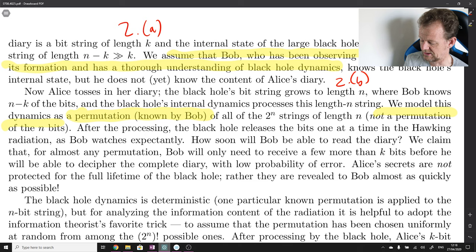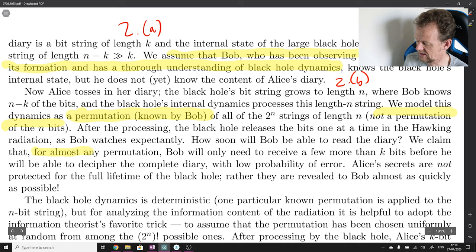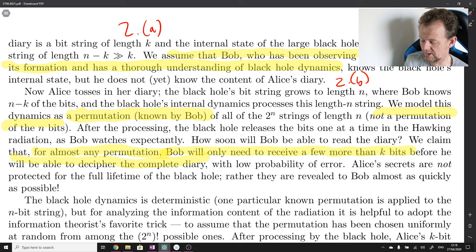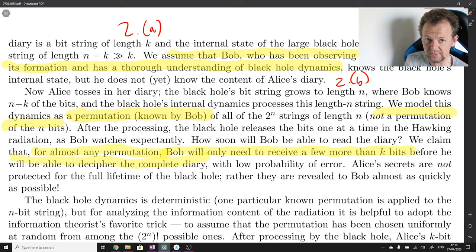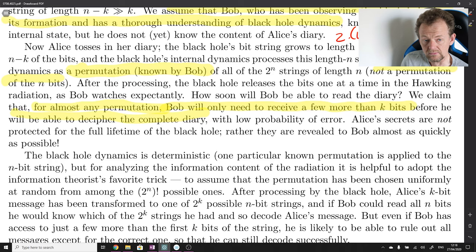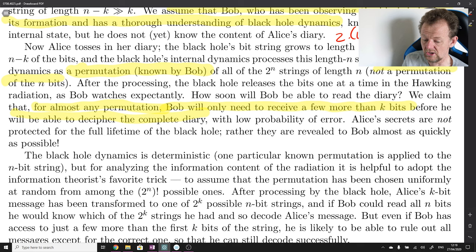After the processing, the black hole releases the bits one at a time in the Hawking radiation, as Bob watches expectantly. How soon will Bob be able to read the diary? The paper claims that for almost any permutation, Bob will need to receive only a few more than k bits before he will be able to decipher the complete diary with a low probability of error. Alice's secrets are not protected for the full lifetime of the black hole — rather, they are revealed to Bob almost as quickly as possible. The black hole dynamics is deterministic — it's a known permutation, and therefore reversible. We want to assume that black holes evolve unitarily or reversibly in the classical context.